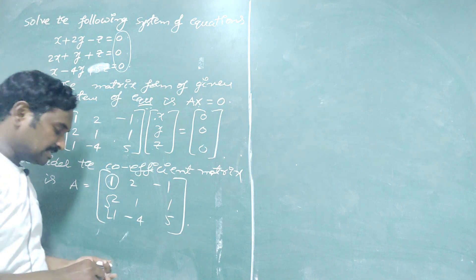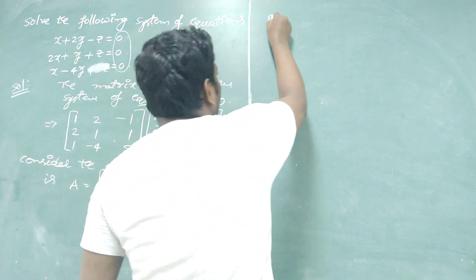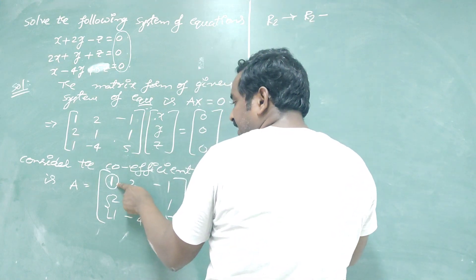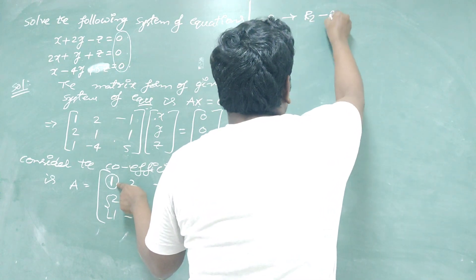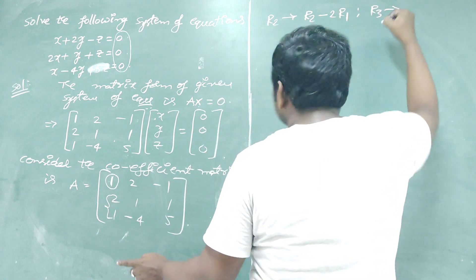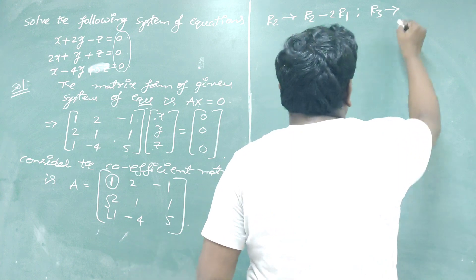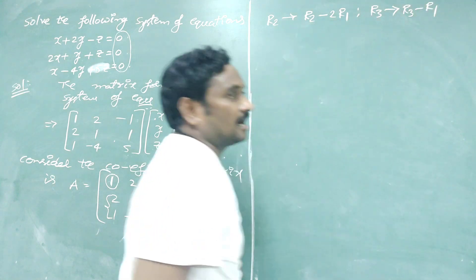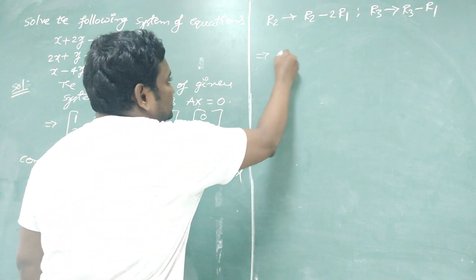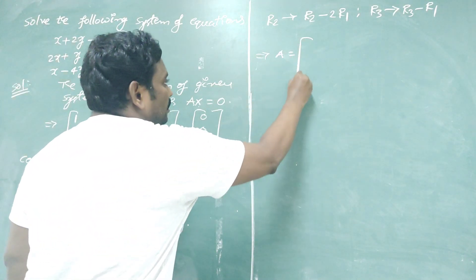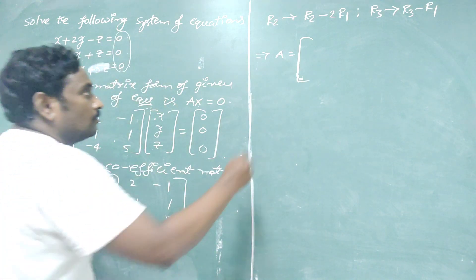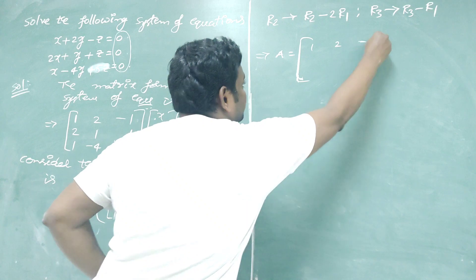The row operations are: R2 → R2 minus 2R1 (since the element is 2, multiply first row by 2 and subtract from second row), and R3 → R3 minus R1 (since both elements are 1, just subtract). After these operations, the first row stays as 1, 2, minus 1.